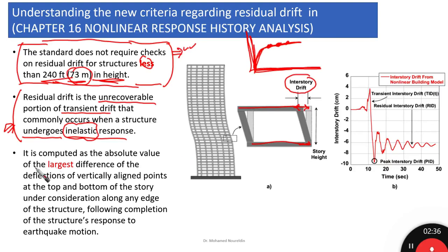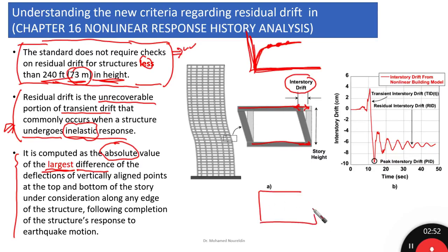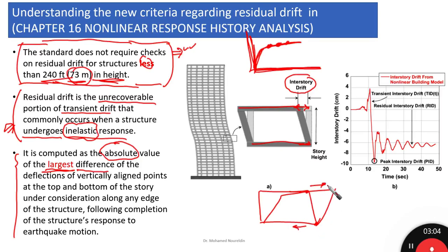How do we compute residual drift? It is computed as the absolute value of the largest difference. We use the word 'absolute' because sometimes the building goes in one direction, and sometimes one point goes in one direction while another point goes in the opposite direction. So we are talking about the absolute value — how much difference there is between two successive floors.